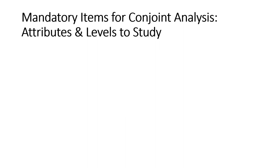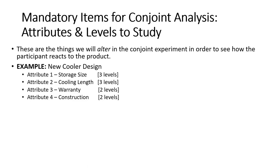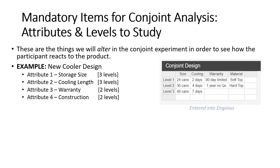Next, and perhaps one of the most important steps in a conjoint study design, is to figure out the attributes that we'll be investigating and what levels to set them at. These are our independent variables. In this new cooler design conjoint study, there are four attributes: storage size (24-can, 36-can, or 48-can), cooling length (2-day, 4-day, or 7-day), warranty (a 90-day limited warranty or a 1-year no-questions-asked warranty), and construction material (soft top or hard top cooler).